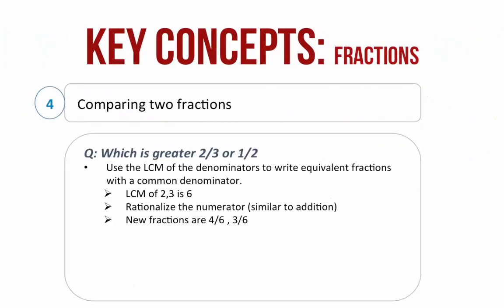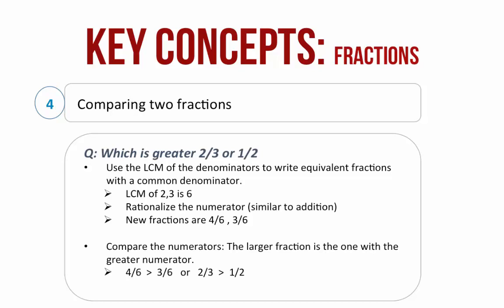Comparing two fractions. Let us take an example: which is greater, 2 by 3 or 1 by 2? Use the LCM of the denominators to write equivalent fractions with a common denominator. LCM of 2 and 3 is 6. Rationalize the numerator as we did in addition of two fractions. Therefore the new fractions are 4 by 6 and 3 by 6. Compare the numerators: since 4 is greater than 3, 4 by 6 is greater than 3 by 6, or 2 by 3 is greater than 1 by 2.